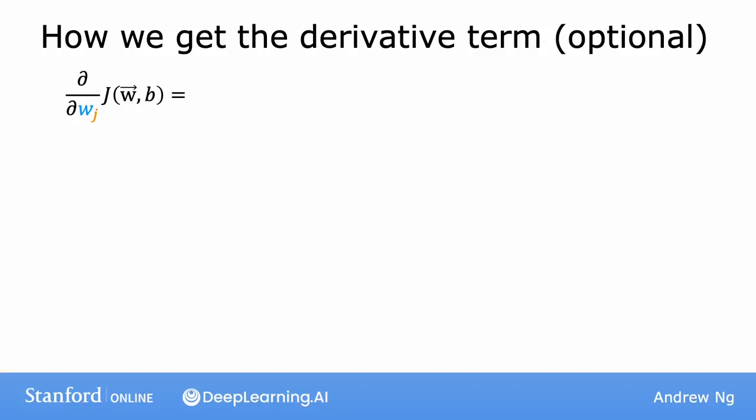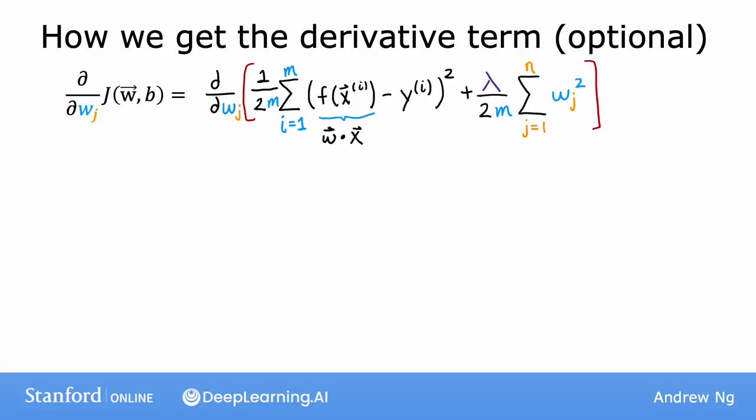So let's step through quickly the derivative calculation. The derivative of j with respect to w_j looks like this. Recall that f of x for linear regression is defined as w dot x plus b, or w dot product x plus b.